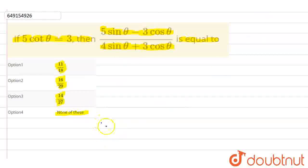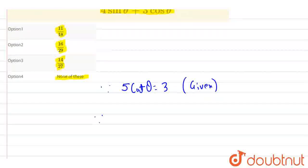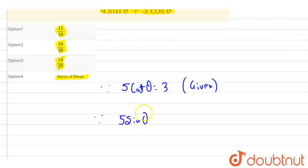In this question, we are given that 5 cot θ equals 3. We need to find the value of the expression (5 sin θ - 3 cos θ)/(4 sin θ + 3 cos θ).